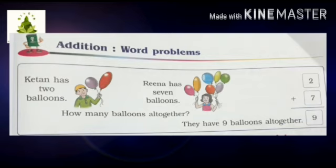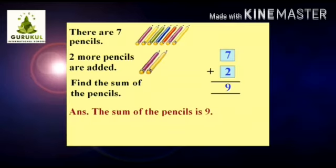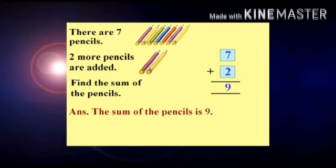One more example. There are 7 pencils. 2 more pencils are added. Find the sum of the pencils. In the first sentence, how many pencils are there? 7 — so in the box you write 7. In the second sentence, how many pencils were added? 2 pencils — so you write 2 in the second box. You need to add a plus sign. So 7 plus 2 is equal to 9. The sum of the pencils is 9.